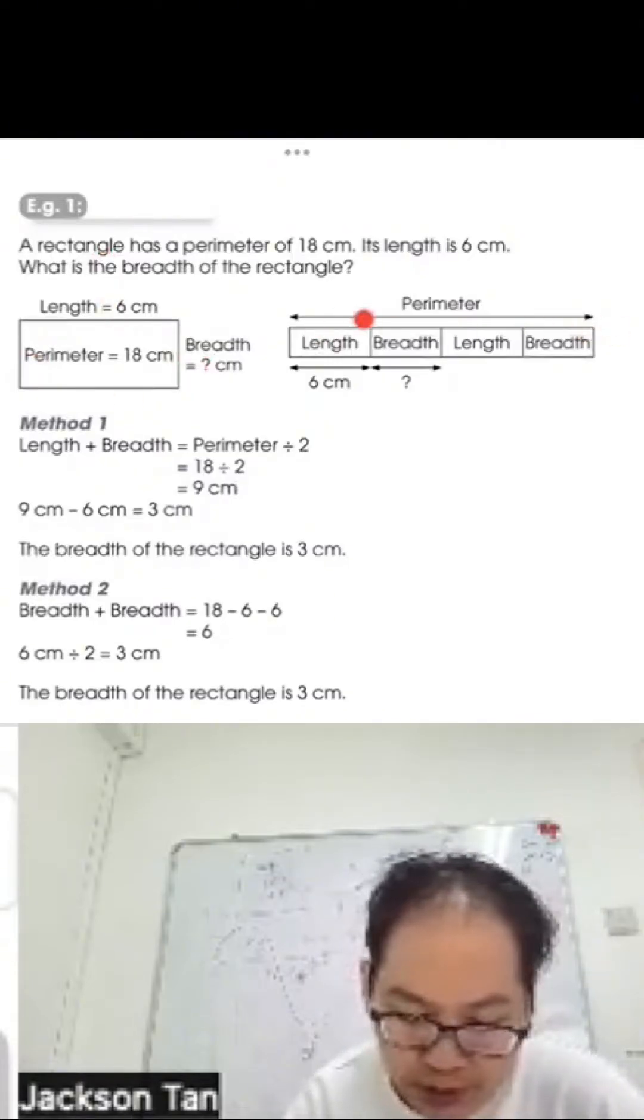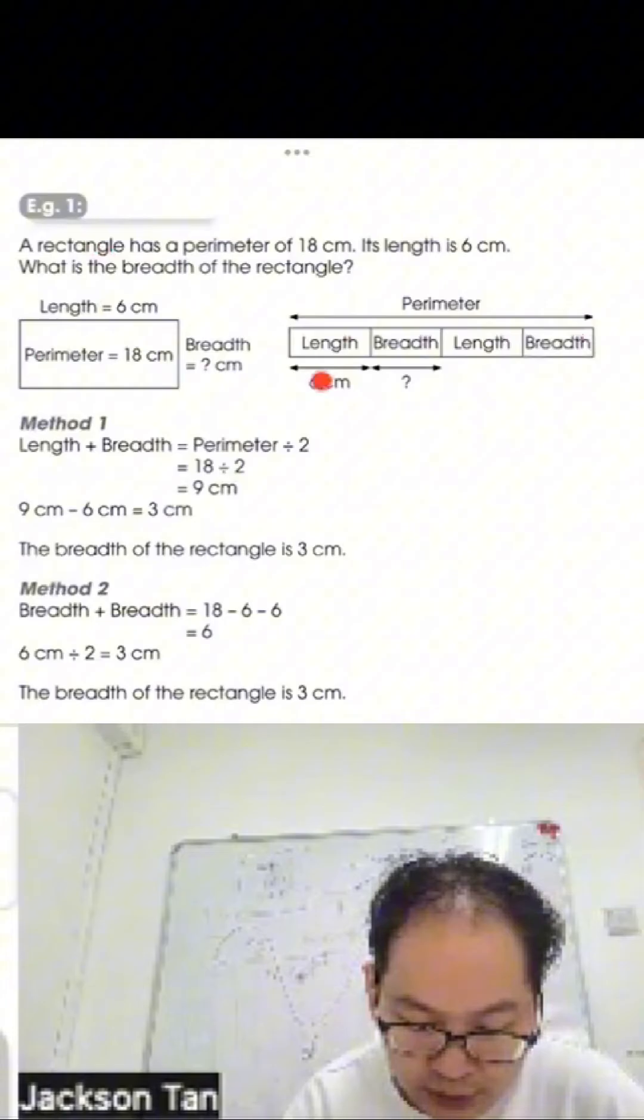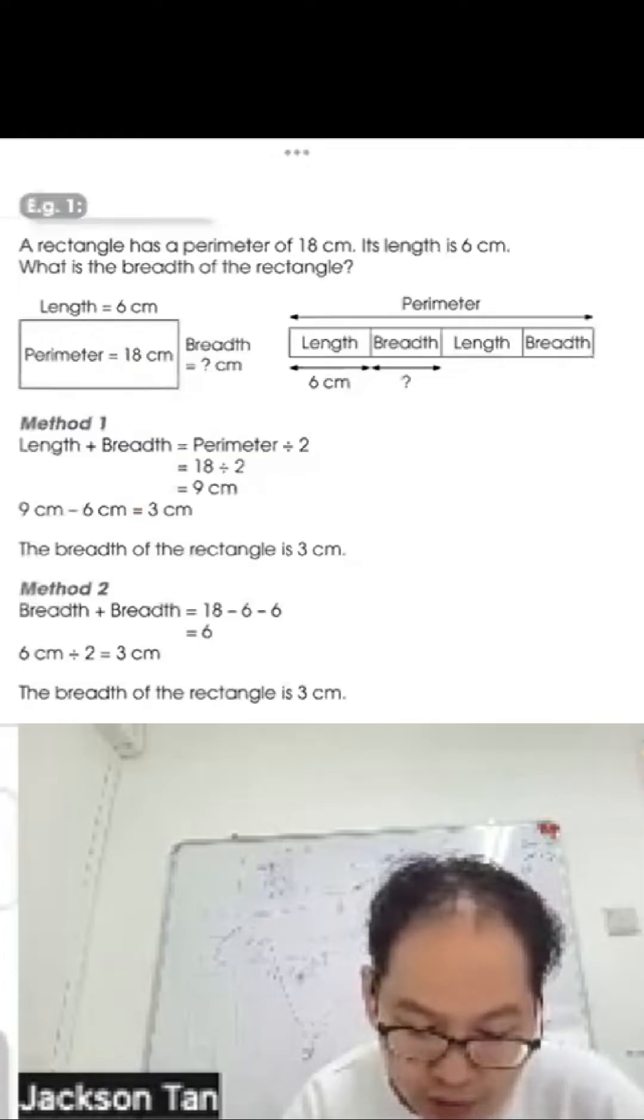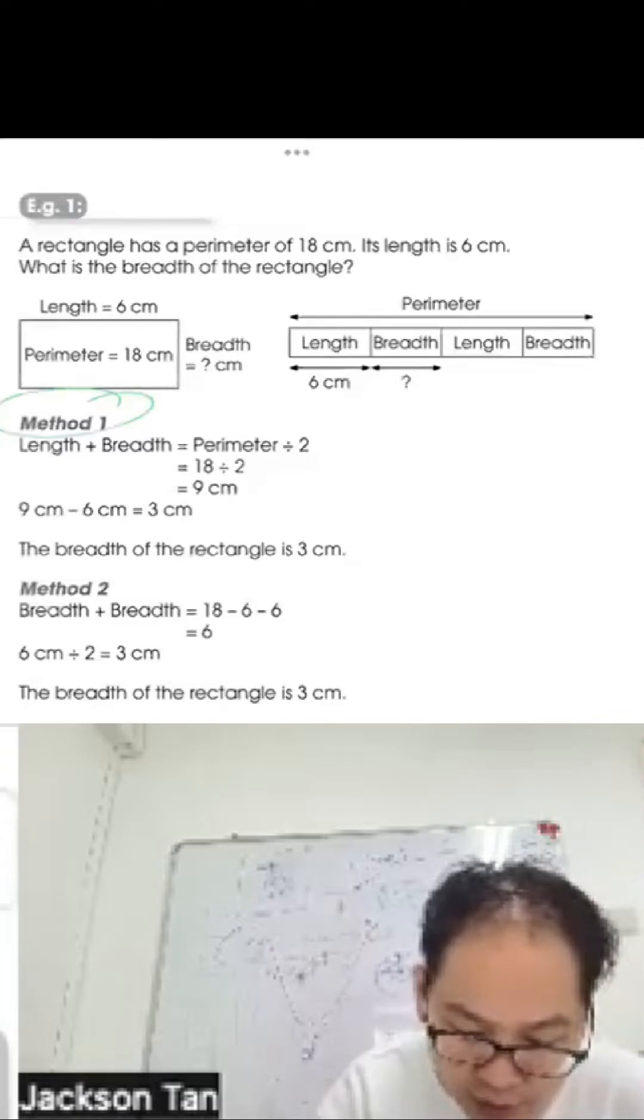Method 1: Take the perimeter 18, minus 6, minus 6, divide by 2 to get the breadth, which is 3 cm. Method 2: The perimeter 18 divided by 2 gives 9 for length and breadth together. Nine minus 6 equals 3 cm. Either method works.